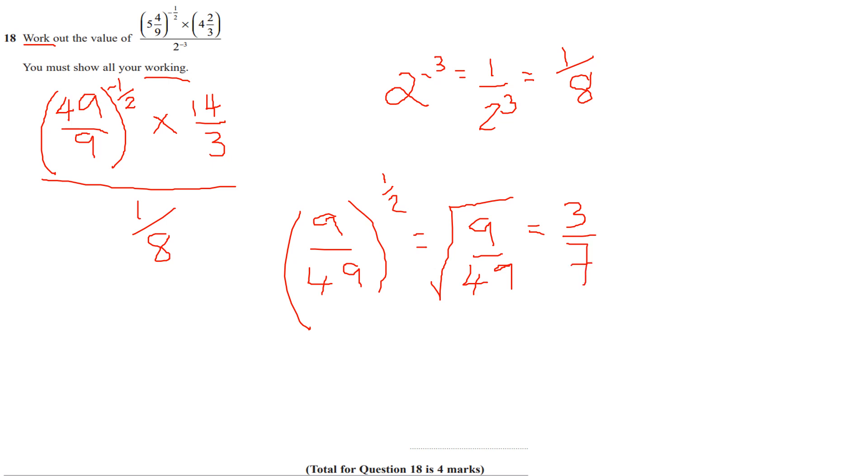So I'm going to have 3 sevenths multiplied by 14 thirds, all divided by 1 eighth. I'm going to cross cancel here or cross simplify. So that's going to go with that. So 1 and 1, dividing the top and bottom by 7. Then 1 and 2. So here I will get 1 times 2, which is 2. So I'll get 2 out of 1 divided by 1 eighth.